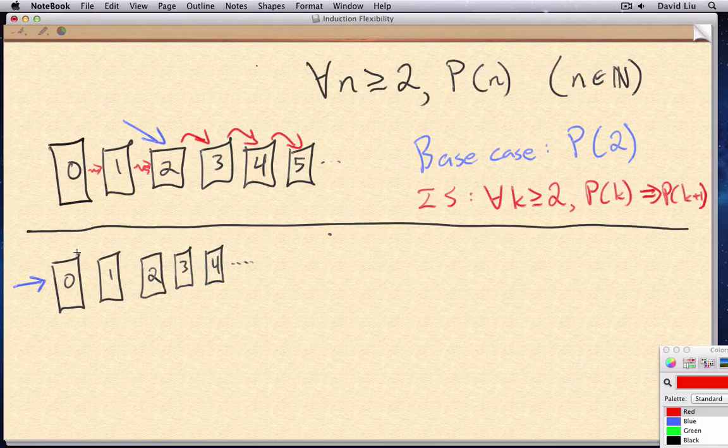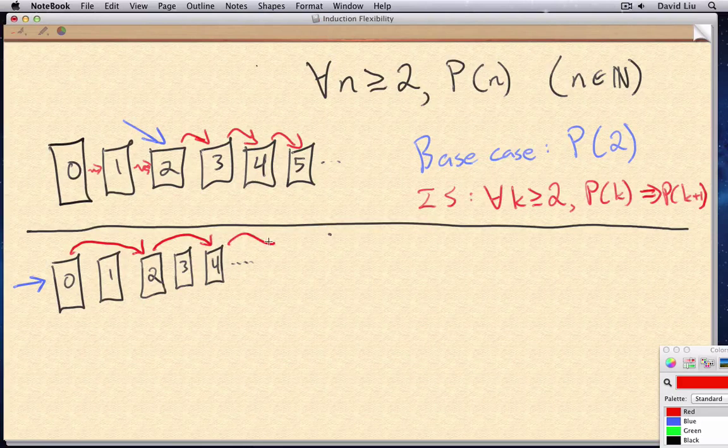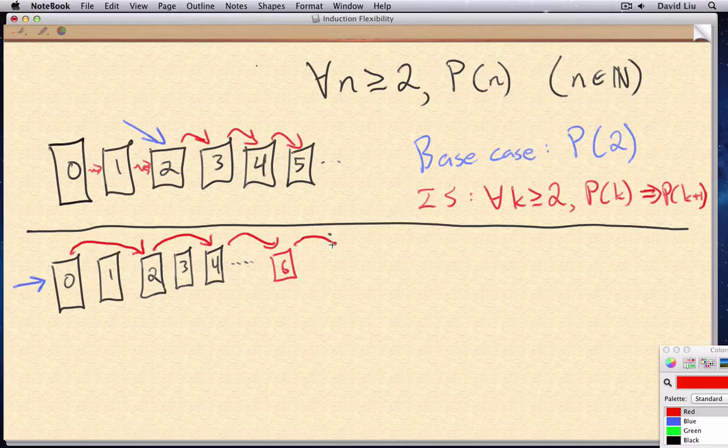So that when the zero fell, somehow it pushed the two down. And the two pushed the four down. And the four pushed, I haven't drawn it here, but the six down, like that.